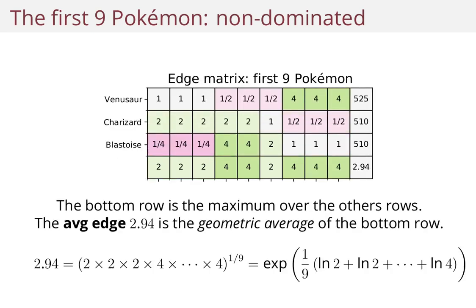So we take the maximum over each row to produce this final row. And we'll use the geometric average of the bottom row to determine how good this party is. This is the average edge or the total score — the power of the party. Here it's 2.94.